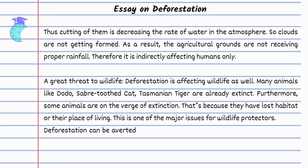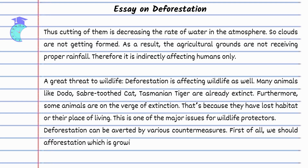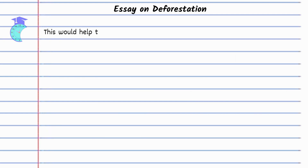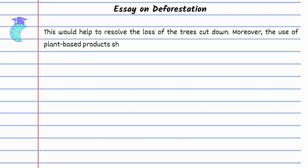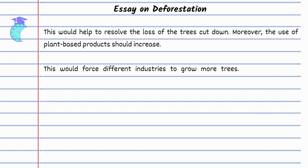Deforestation can be averted by various countermeasures. First of all, we should practice afforestation, which is the growing of trees in the forest. This would help to resolve the loss of the trees cut down. Moreover, the use of plant-based products should increase, which would force different industries to grow more trees. As a result, the environment will also get benefit from it.